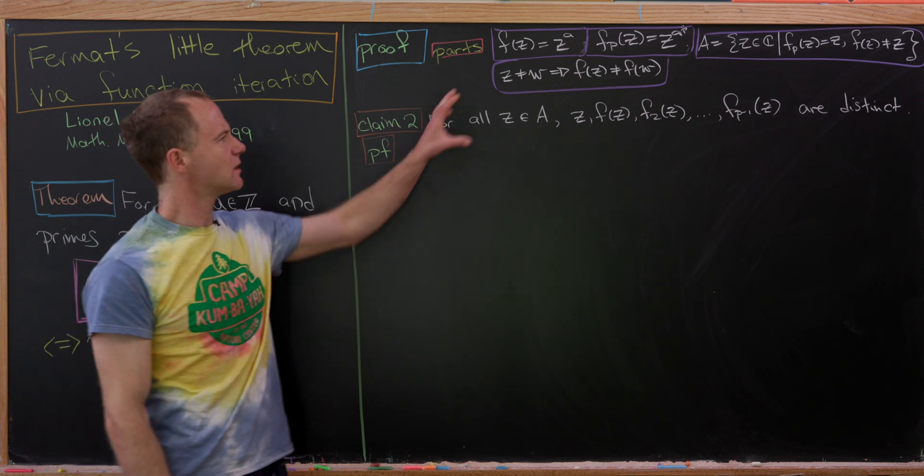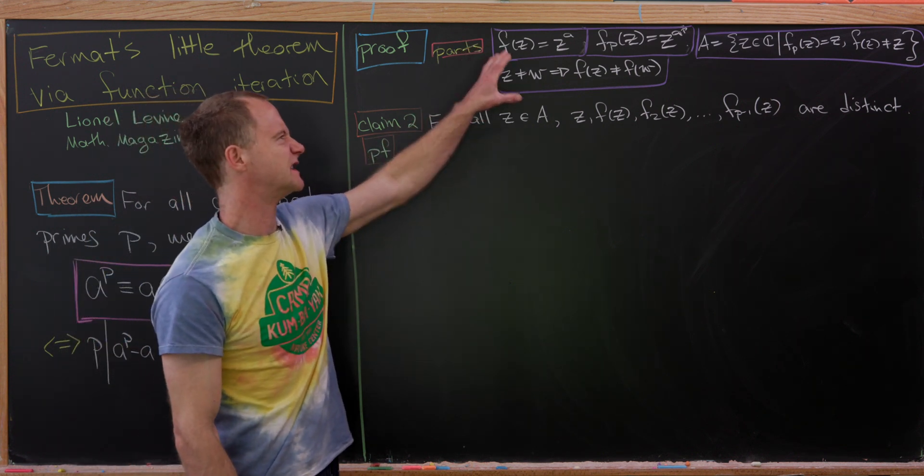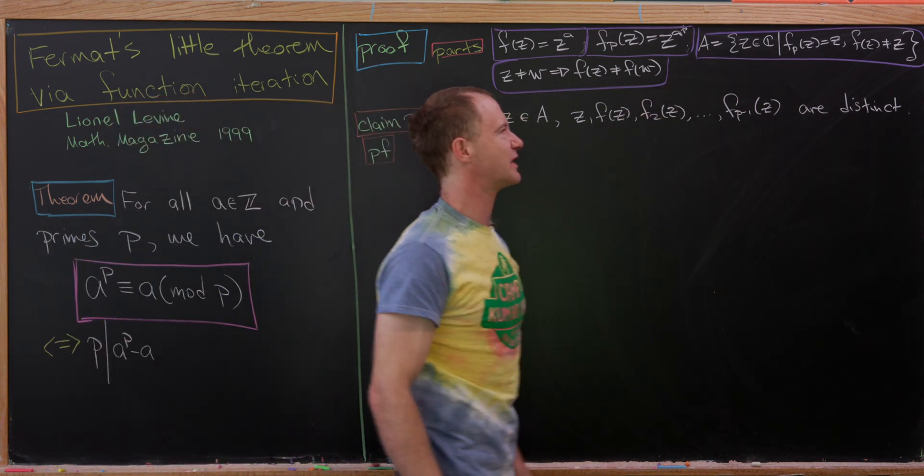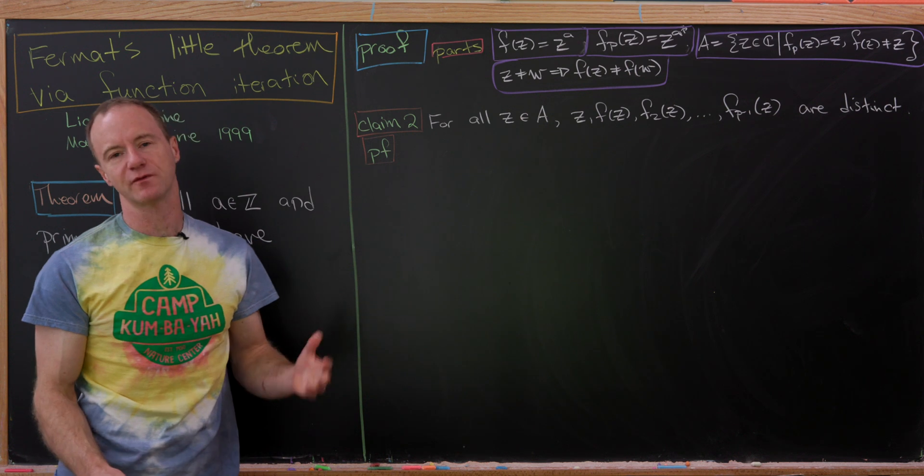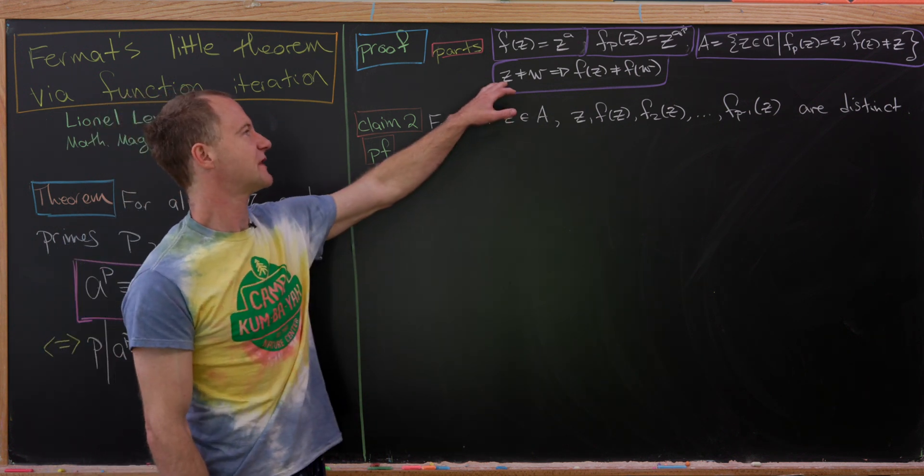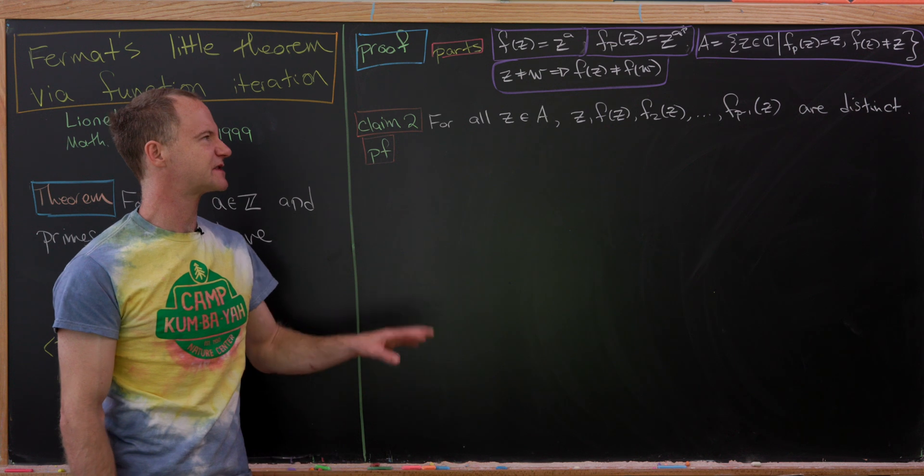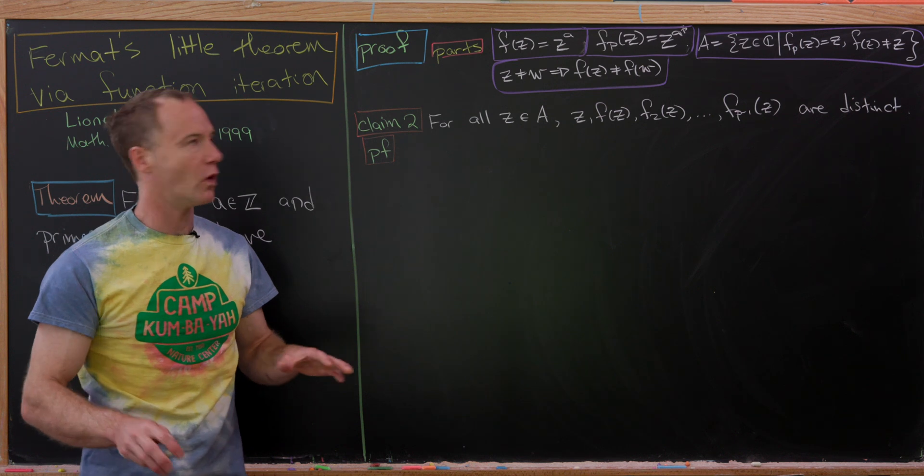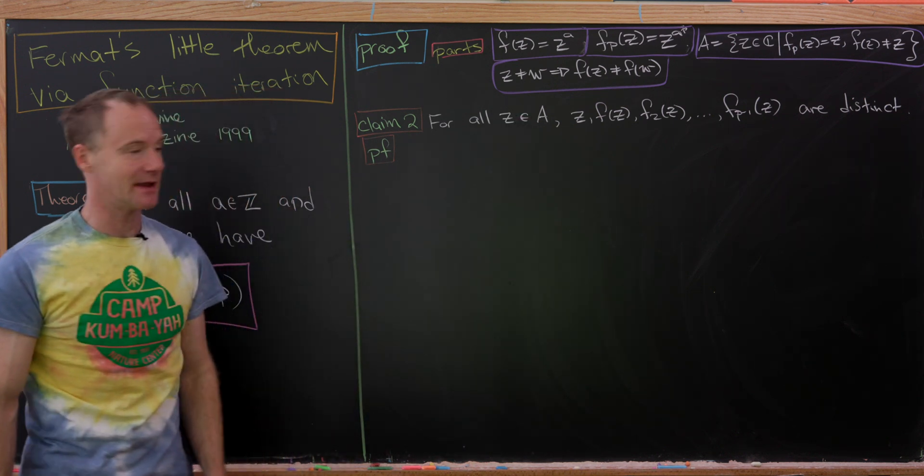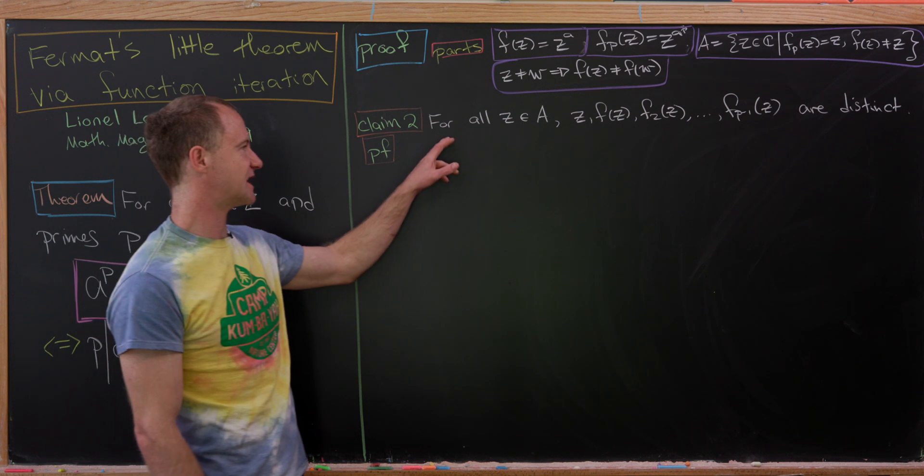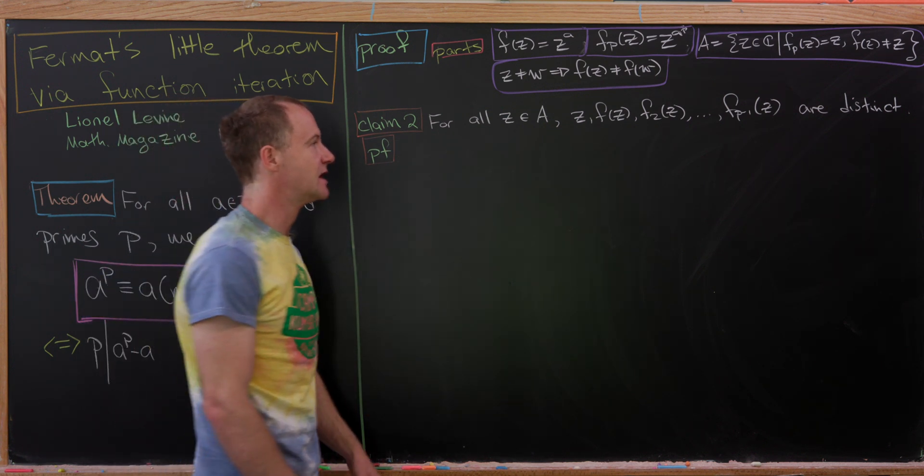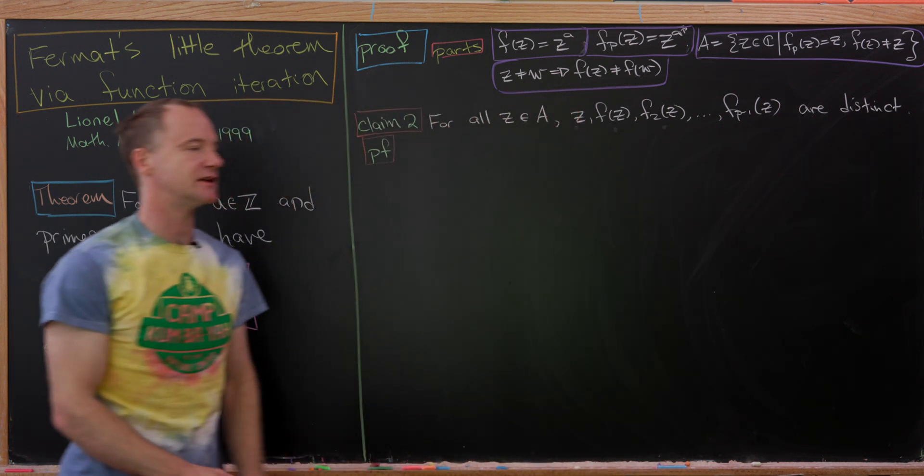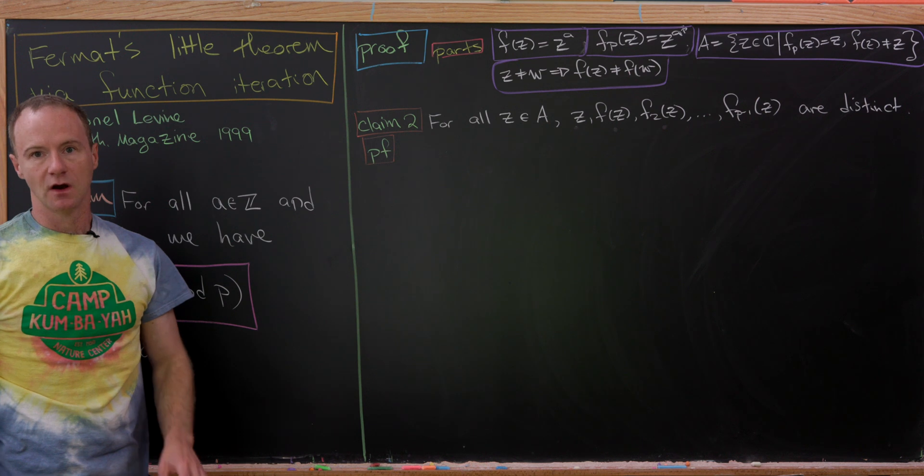Okay, so now let's move on. Okay, so here's some of the stuff that we've developed so far. We've got these two functions, one which is an iterate of the other. We have this set built out of fixed points of one of the functions, but not the other. And then we've got this result that this function is, well, not necessarily one-to-one, but one-to-one on the set A. And now we're going to prove our second claim, which says for all Z in A, Z, F of Z, F2Z, all the way up to F P minus 1Z are all distinct numbers.